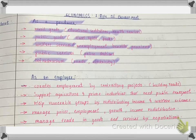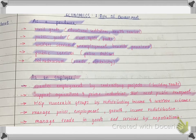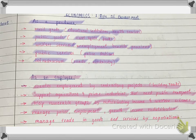As an employer, the government creates employment by contracting projects such as building roads. It supports agriculture and primary industries, helps with public transport, and assists vulnerable groups by redistributing income through welfare schemes. It also manages prices, employment, growth, and income redistribution.